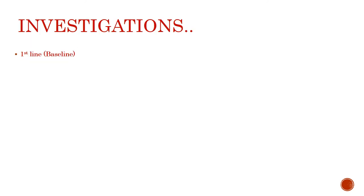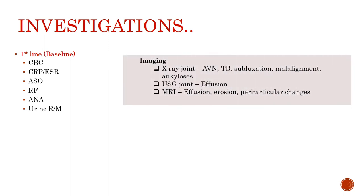Moving to investigations: first-line or baseline investigations are CBC, CRP, ESR, antistreptolysin O (ASO) titers, rheumatoid factor, ANA, and urine routine microscopy. Imaging may also be required — X-ray of the joint to rule out avascular necrosis, tuberculosis, subluxation, malalignment, and ankylosis; ultrasound to rule out effusion; and MRI to rule out effusion, erosion, and periarticular changes. CPK may also be required to rule out proximal muscle weakness. Second-line investigations include detailed serology: anti-dsDNA and anti-smooth muscle antibody.